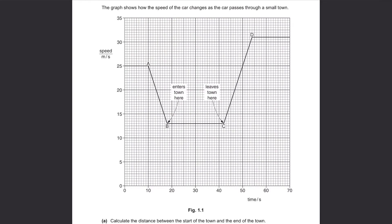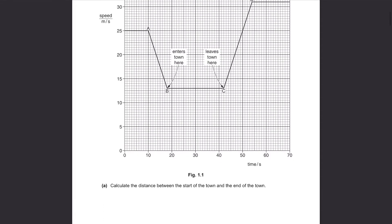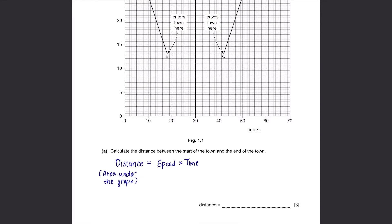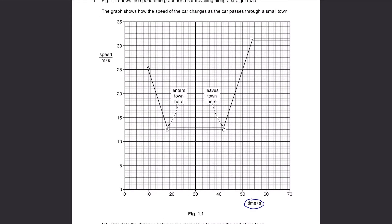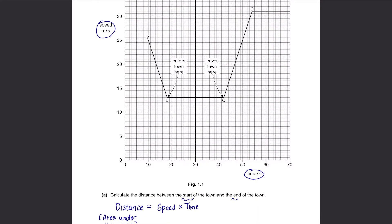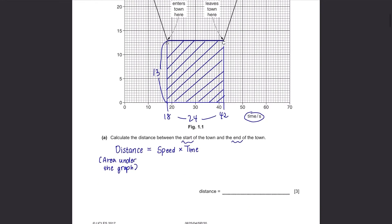Part A. Calculate the distance between the start of the town and the end of the town. We are given a speed time graph here and in order to find the distance from it, we need to find the area under the graph because distance equals speed times time. The width from B to C is from 18 to 42 so that's 24, and for height it's from 0 to 13. We then multiply 24 with 13 and we get 312m as the final answer.